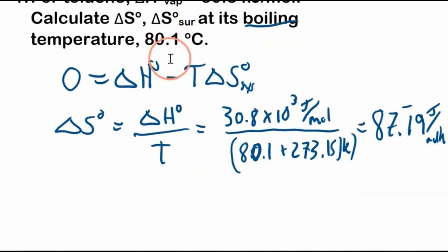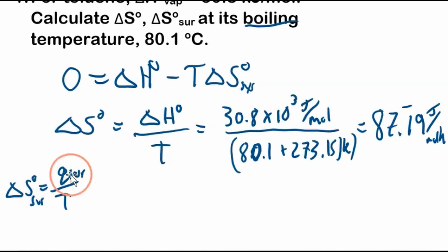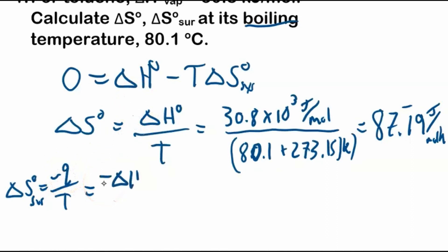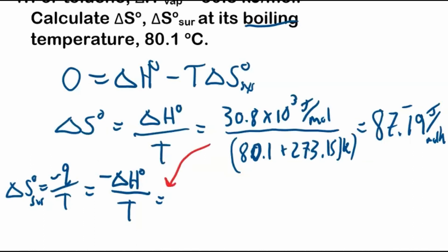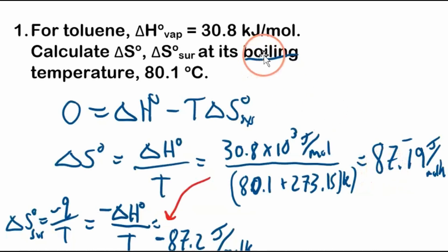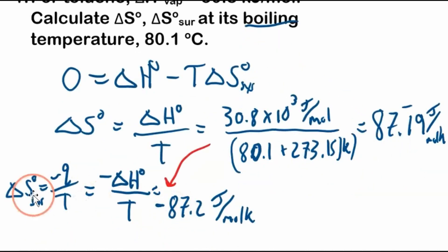For the change in entropy of the surroundings: by the thermodynamic definition, entropy equals Q over T, where Q is the heat transferred to the system. For the surroundings, the heat is the negative of the system's heat, and under constant pressure with PV work only, Q equals delta H. So the standard change in entropy of the surroundings equals negative delta H over T — the same numbers as before, giving negative 87.2 joules per mole Kelvin. The system's entropy is increasing because it's boiling from liquid to gas, so the surroundings lose entropy.